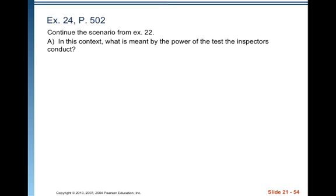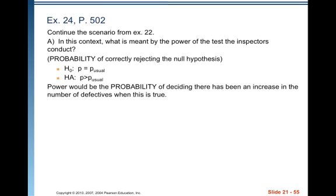We need to talk about power — power is the most important thing. What is meant by the power of the test? It is the probability of correctly rejecting the null hypothesis. Our null is that the proportion of defectives equals the usual proportion, and the alternative is that it's greater. Power is the probability of deciding the alternative is true — that there has been an increase in defective items — when this is actually true, i.e., when that is the correct decision to make.